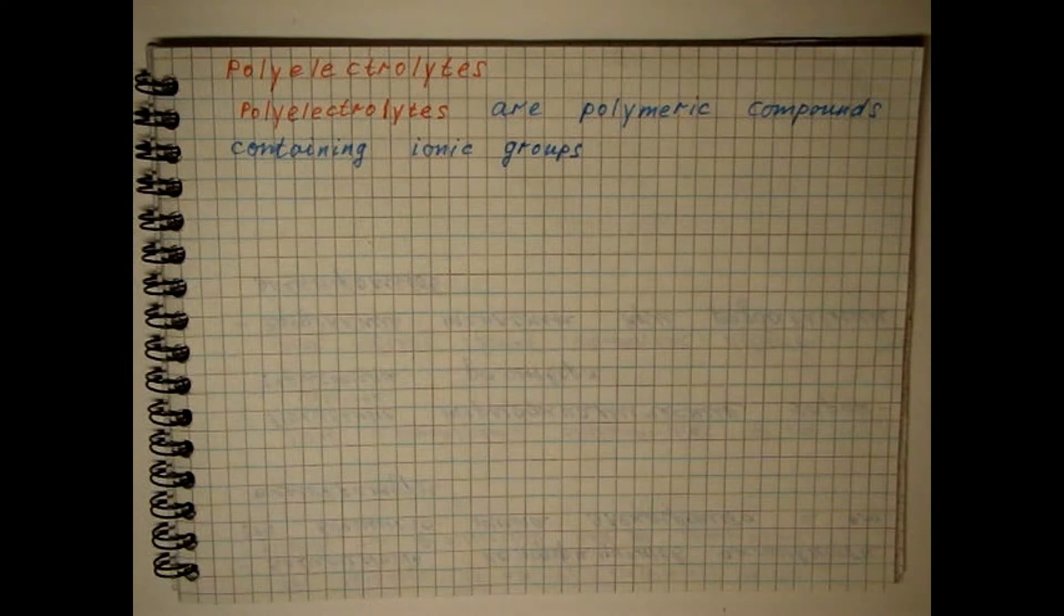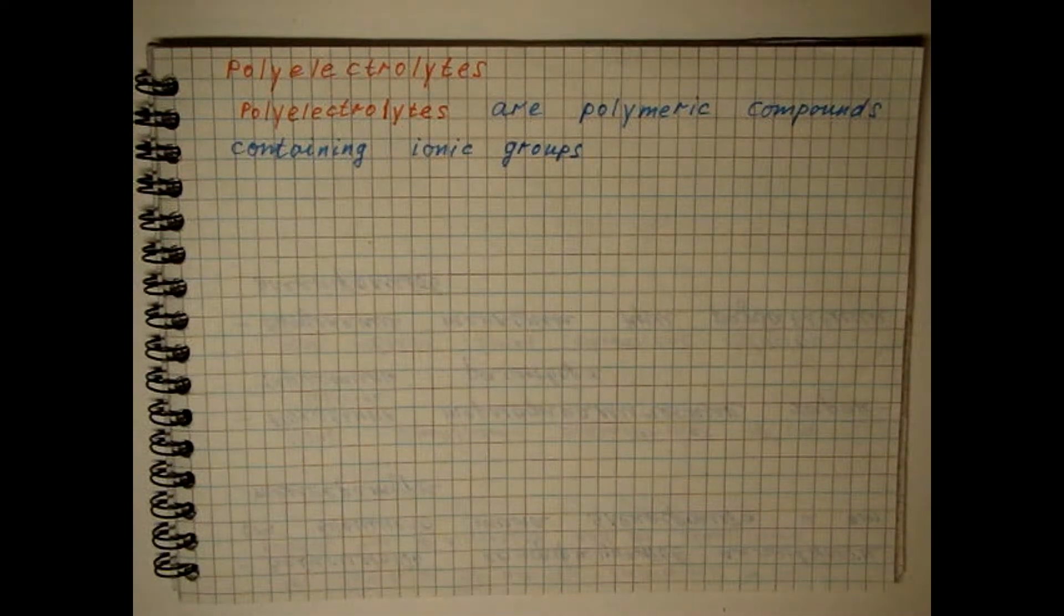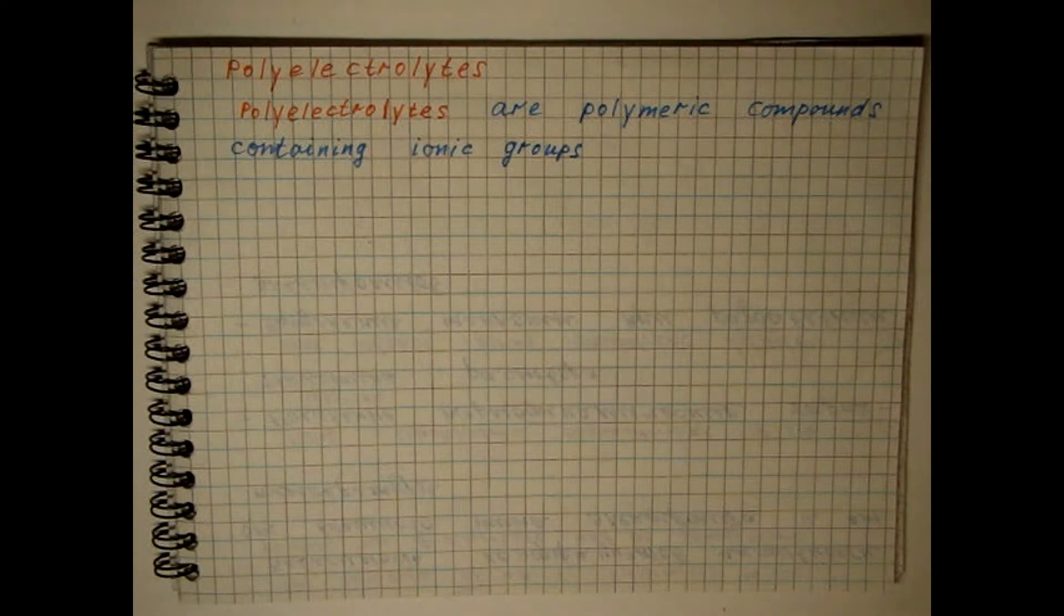In the solution of the polyelectrolyte, there are macro-ions, the charge groups of which are connected to each other by chemical bonds and an equivalent amount of contra-ions.